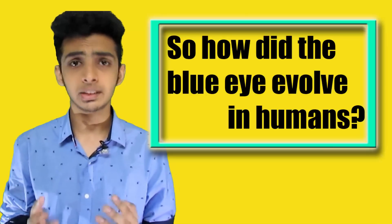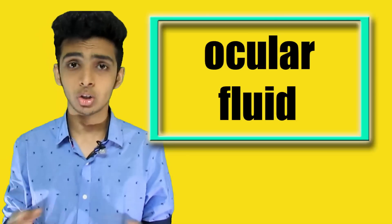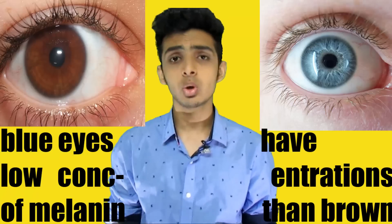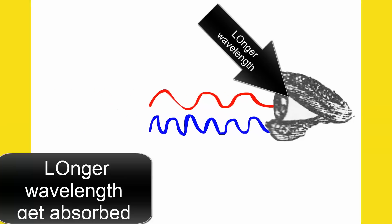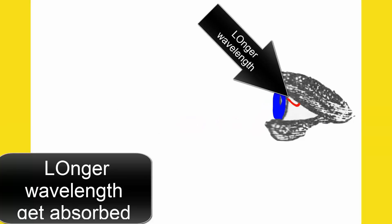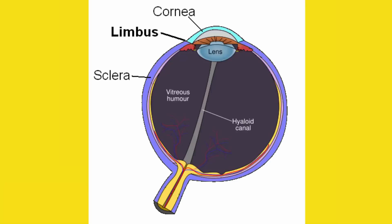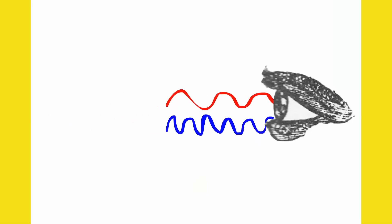So how did blue eyes evolve in humans? There is no blue pigmentation either in the iris or the ocular fluid. Dissection reveals that the iris pigment epithelium is brownish black, due to the presence of melanin. Unlike brown eyes, blue eyes have a low concentration of melanin. So the longer wavelengths of light tend to get absorbed by the dark underlying epithelium, while the shorter wavelengths are reflected and undergo Rayleigh scattering in the turbid medium of the stroma.